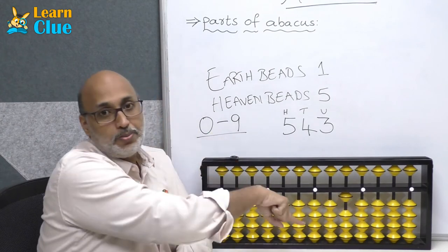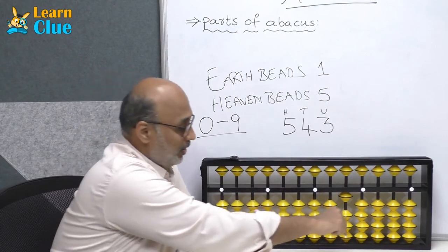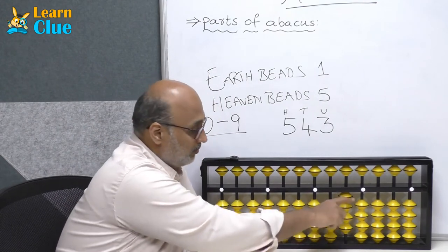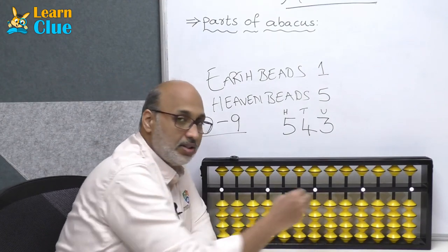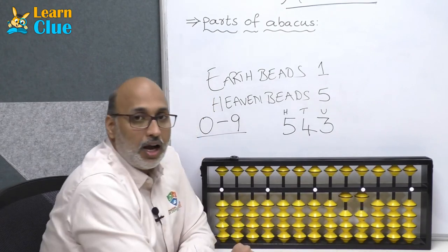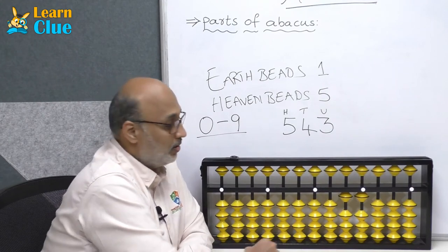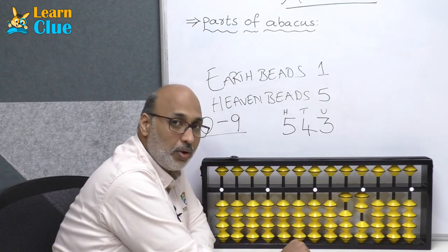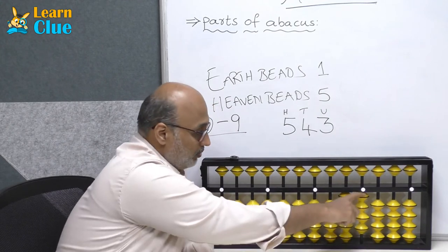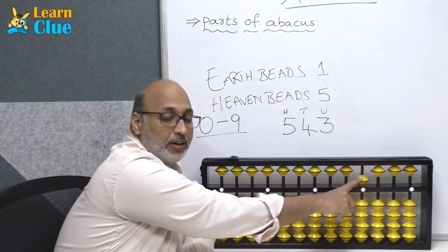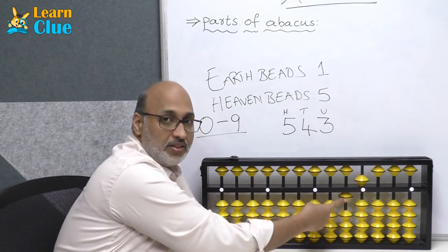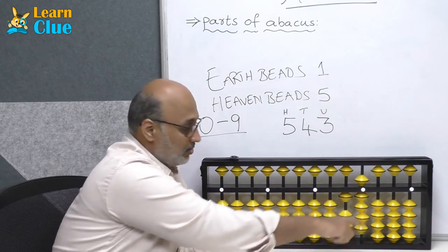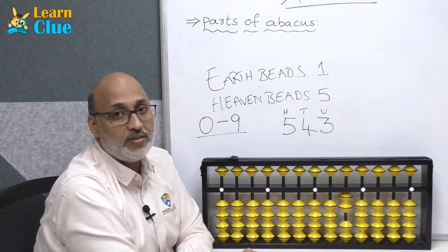If I place one bead in the 10's place, the value of the bead is 1 but it is in the 10's place, so the value becomes 10. Two beads in the 10's place gives 20, then 30, 40. Moving one bead in the unit's place and one in the 10's place gives 11. Adding more earth beads in unit's place gives 12, 13, 14. Moving the heaven bead to the unit's place gives 5, so 10 plus 5 is 15, then 16, 17, 18, 19. Two beads in the 10's place gives 20.